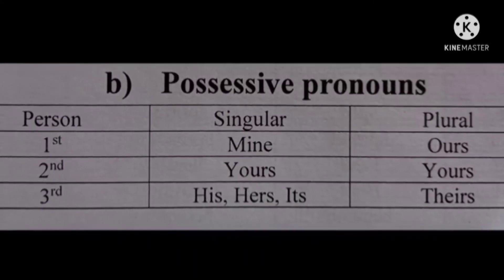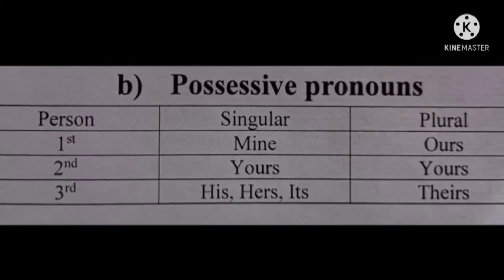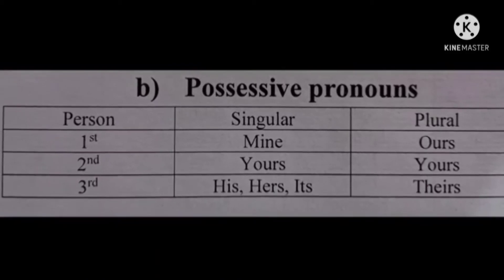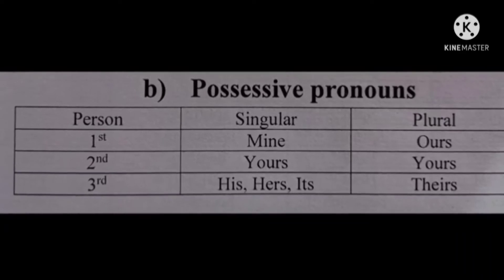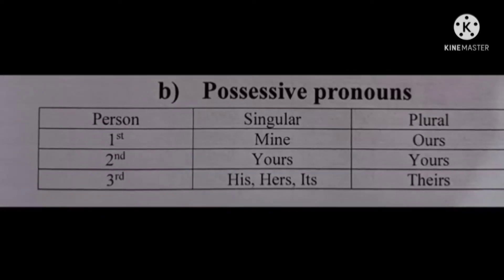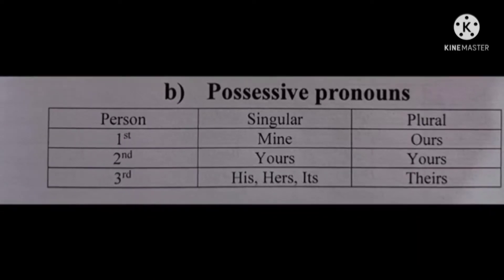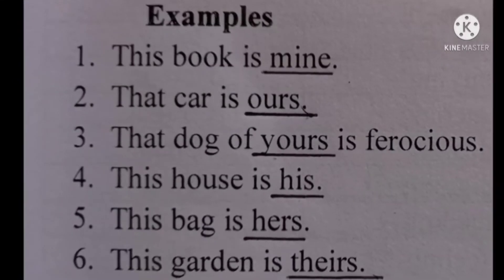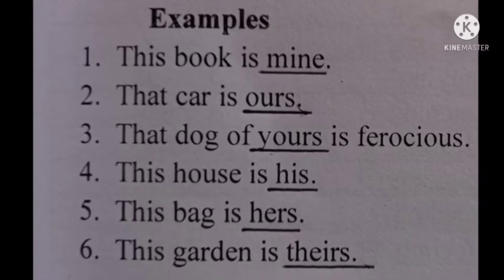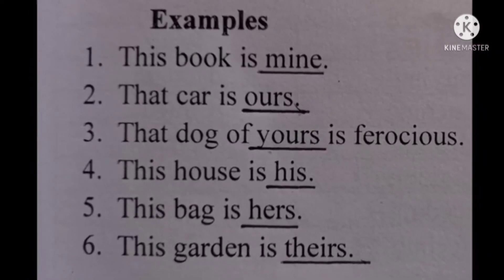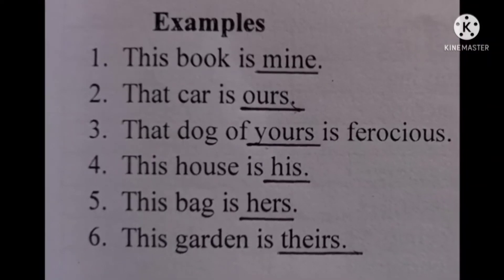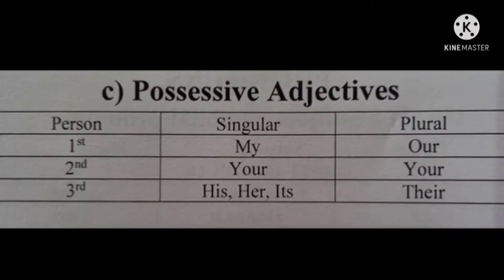The third heading under pronouns is possessive pronouns. Under this heading we see three persons: first person singular: mine; first person plural: ours; second person singular and plural: yours; third person singular: his, hers, its; third person plural: theirs. For example: This book is mine. That car is ours. That dog of yours is ferocious. This house is his. This bag is hers. This garden is theirs.